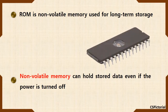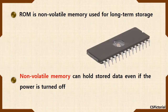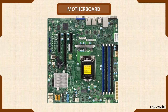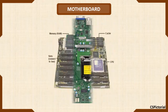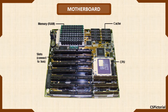Now you would have got a clear idea about volatile memory and non-volatile memory. This is the motherboard — the memory chips RAM, ROM, and cache are all placed as chips on the motherboard.